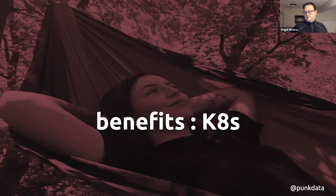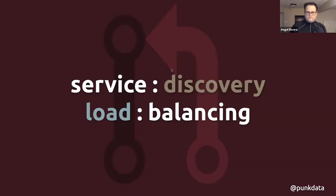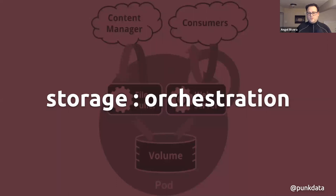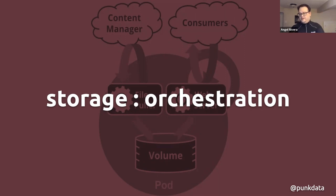Let's talk about the benefits of Kubernetes. First, automatic service discovery and load balancing: service discovery lets you expose containers via DNS or IP address, and load balancing distributes network traffic evenly so that under heavy load the system doesn't pound a single resource — it distributes traffic to maintain optimized performance. Another benefit is storage orchestration: you can mount different types of storage like Amazon EBS or any other cloud provider, as well as local storage, and Kubernetes orchestrates it for you.